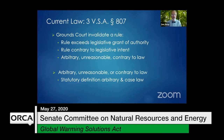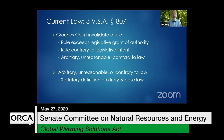A committee member asks whether both scenarios — writing weak rules that won't achieve goals, and writing good rules but failing to implement them — are captured by 3 VSA 807. The presenter confirms both situations are covered: you could write good rules but fail to regulate, or write weak rules that weren't going to achieve those goals anyway.